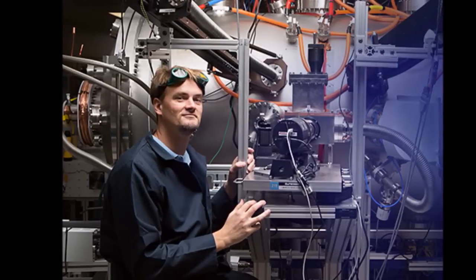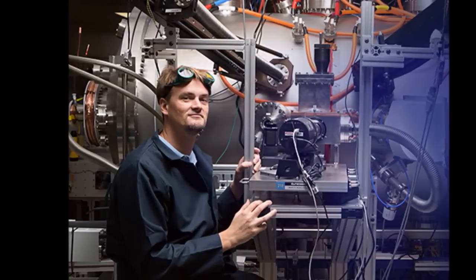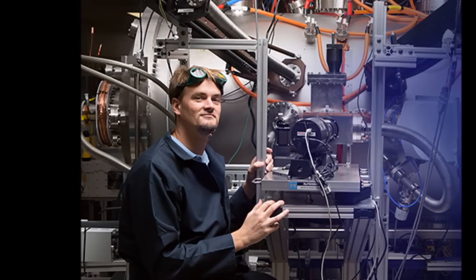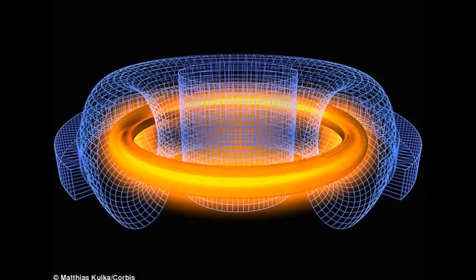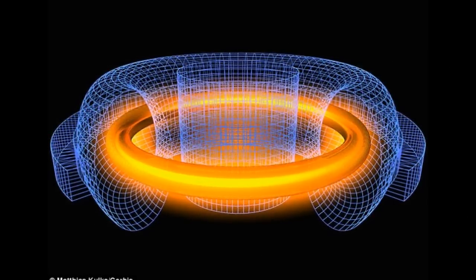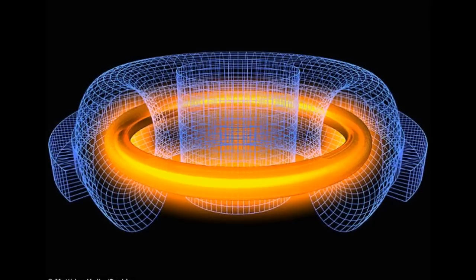According to McGuire, the Lockheed CFR is about the size of a business jet engine and burns a mixture of heavy hydrogen isotopes called deuterium and tritium for fuel. Under sufficient temperature and pressure, the ionized hydrogen atoms fuse together, forming helium-4 and releasing tremendous amounts of energy.